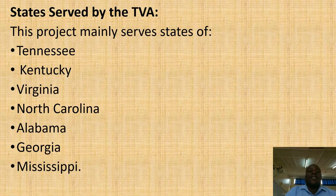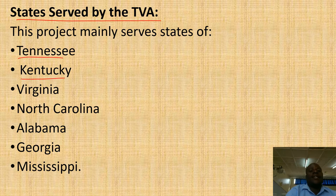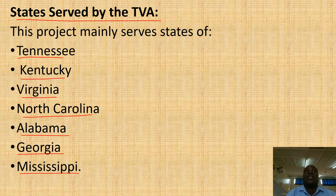Here are the states served by the TVA. We have Tennessee, Kentucky, Virginia, North Carolina, Alabama, Georgia, and Mississippi. These are the states that by then had suffered severe problems like soil erosion,